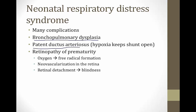A patent ductus arteriosus can develop in premature babies because hypoxia keeps the shunt open. Finally, babies born prematurely can develop retinopathy of prematurity, where oxygen leads to free radical formation that induces neovascularization of the retina — abnormal blood vessel growth — which can cause vision problems, retinal detachment, and even blindness.